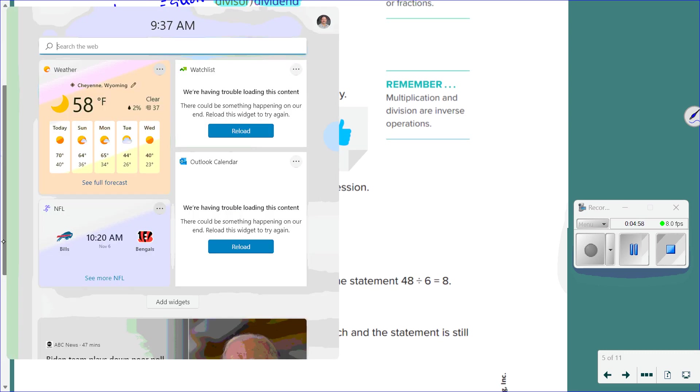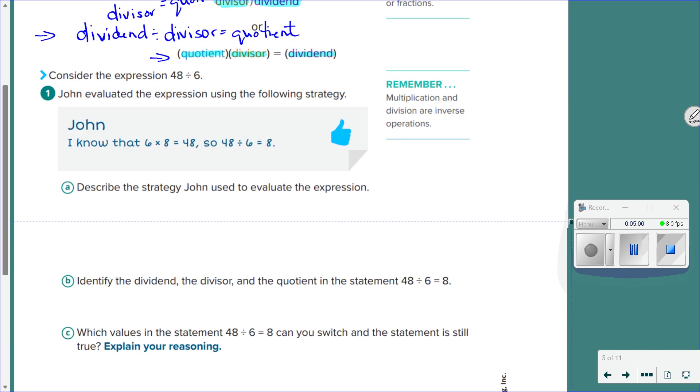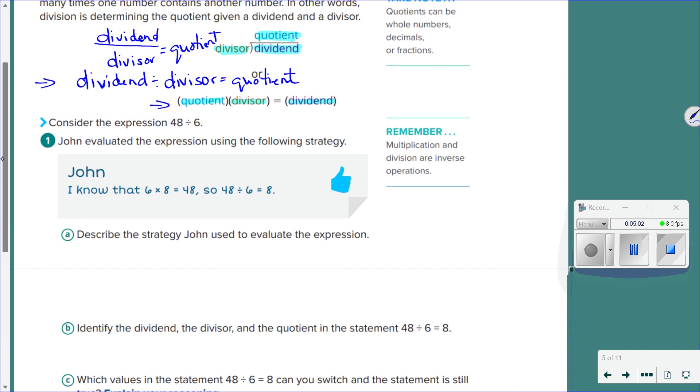Okay, consider the expression of 48 divided by 6. John evaluated the expression using the following strategy. He said, I know 6 times 8 is 48, so if I look at my problem, 48 divided by 6, I know that that equals 8. Is that correct? Guys, there's a huge hint. They gave you the thumbs up. Okay? So yes, we know it's correct.